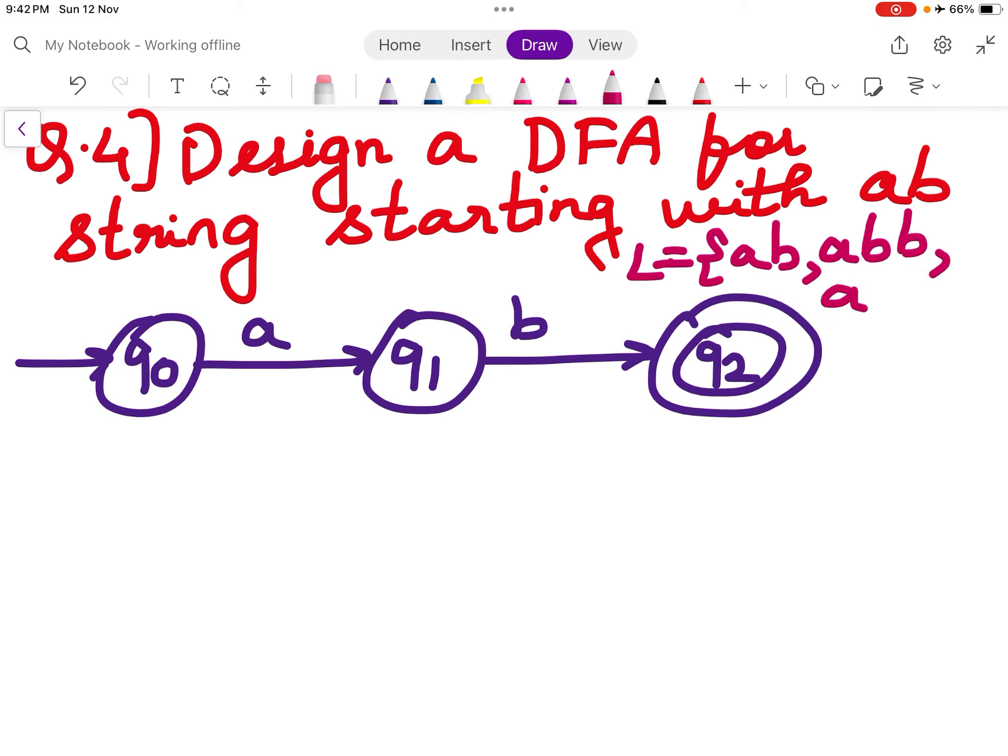It can be ABB, it can be ABA and so on. So if it sees a B then I go to the non-final state, that is I go to the Q3 state. Q3 state any number of A's and B's it will remain in the Q3 state.